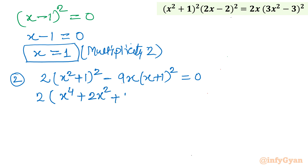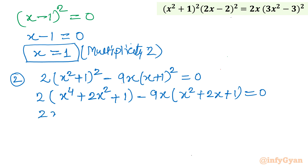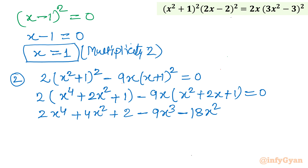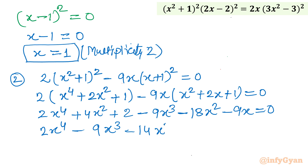Expanding (x² + 1)² gives x⁴ + 2x² + 1, so we get 2x⁴ + 4x² + 2. Expanding (x + 1)² gives x² + 2x + 1, multiplied by 9x gives 9x³ + 18x² + 9x. Simplifying: 2x⁴ - 9x³ + (4x² - 18x²) - 9x + 2 = 0, which is 2x⁴ - 9x³ - 14x² - 9x + 2 = 0.